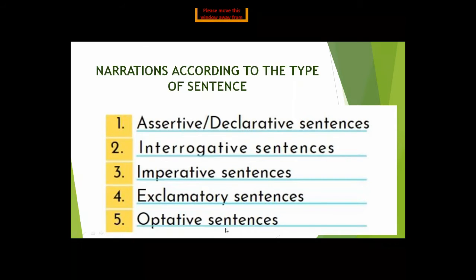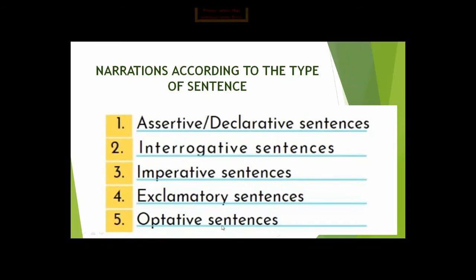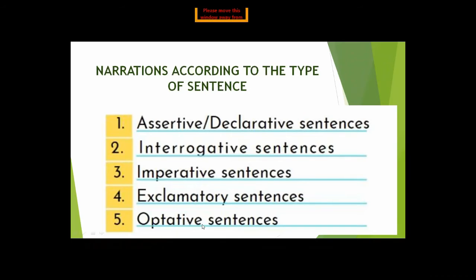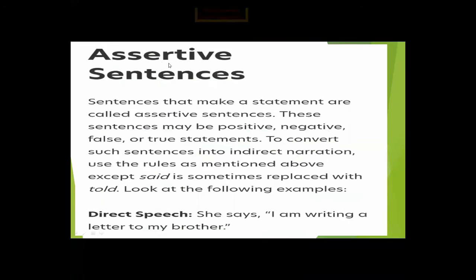Exclamatory sentences are closed with a sign of exclamation. The fifth type is optative sentences. Exclamatory and optative sentences seem alike, but there is a minor difference: exclamatory sentences are about sudden emotions and can be incomplete, while optative sentences are complete sentences expressing wishes, prayers, and desires.